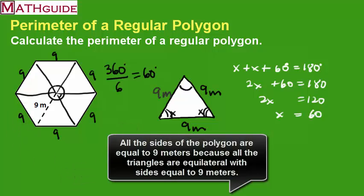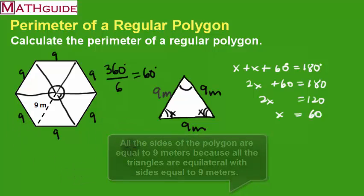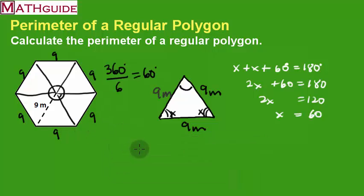So what's the perimeter? Well, you can see that I'm going to add up all those 9s. There's 6 of them. So, I've got 6 nines. Instead of adding 6 nines, I'm going to multiply 6 times 9. And that's 54.